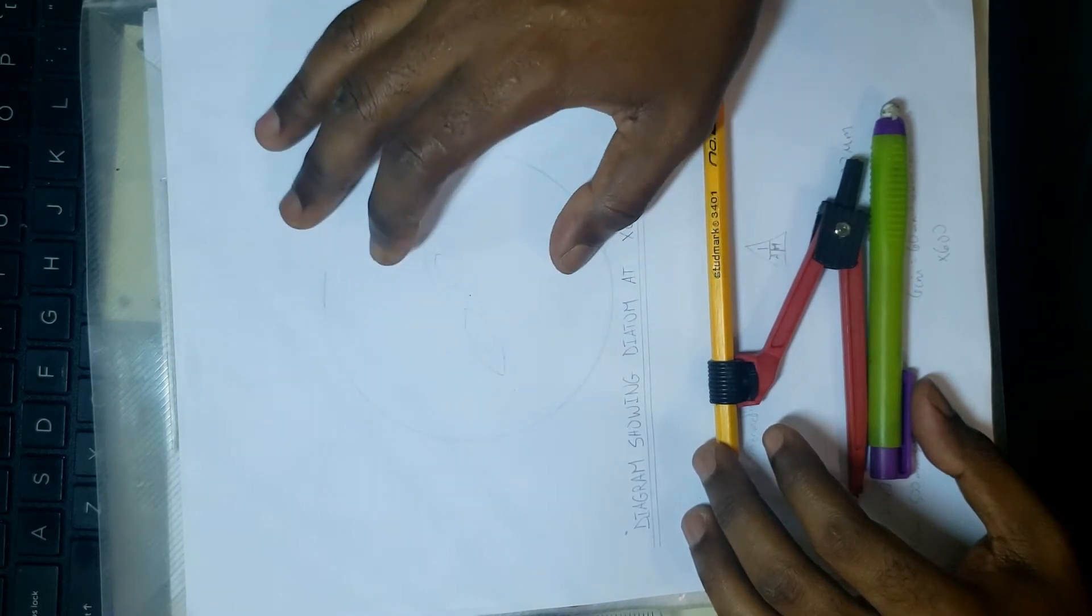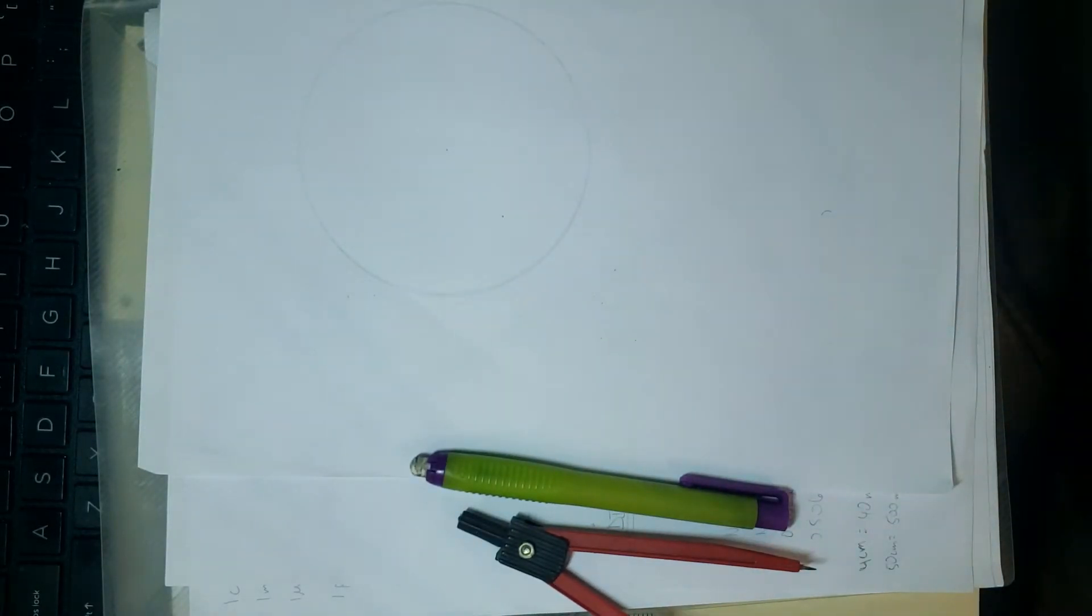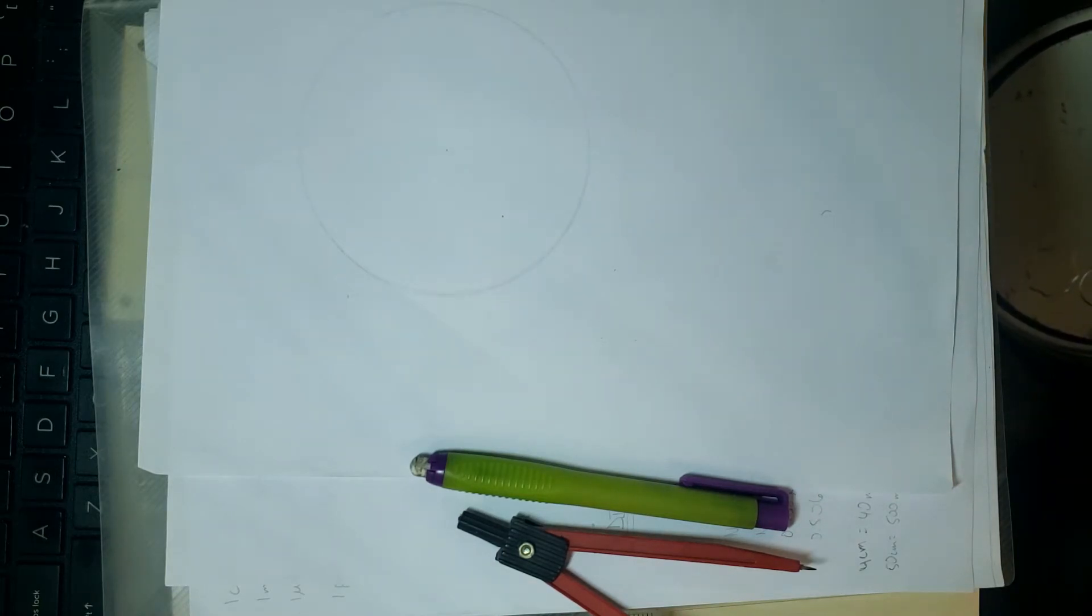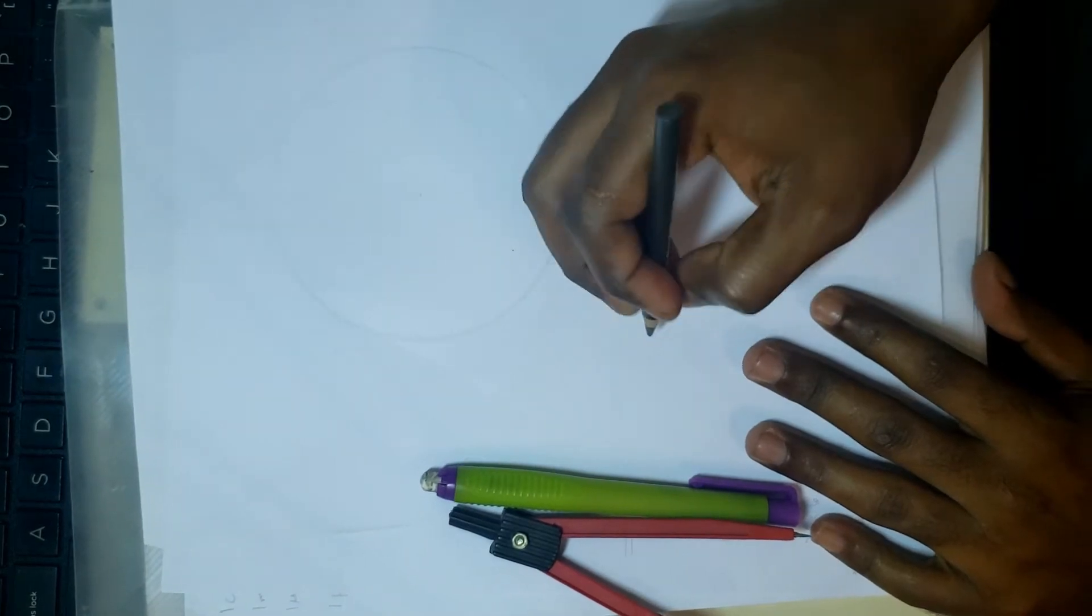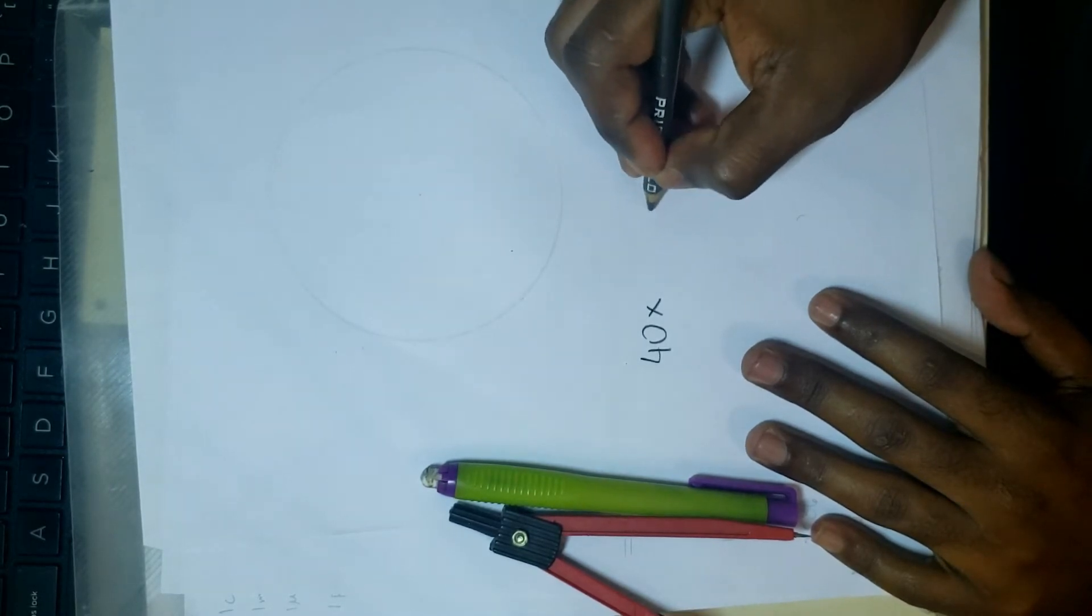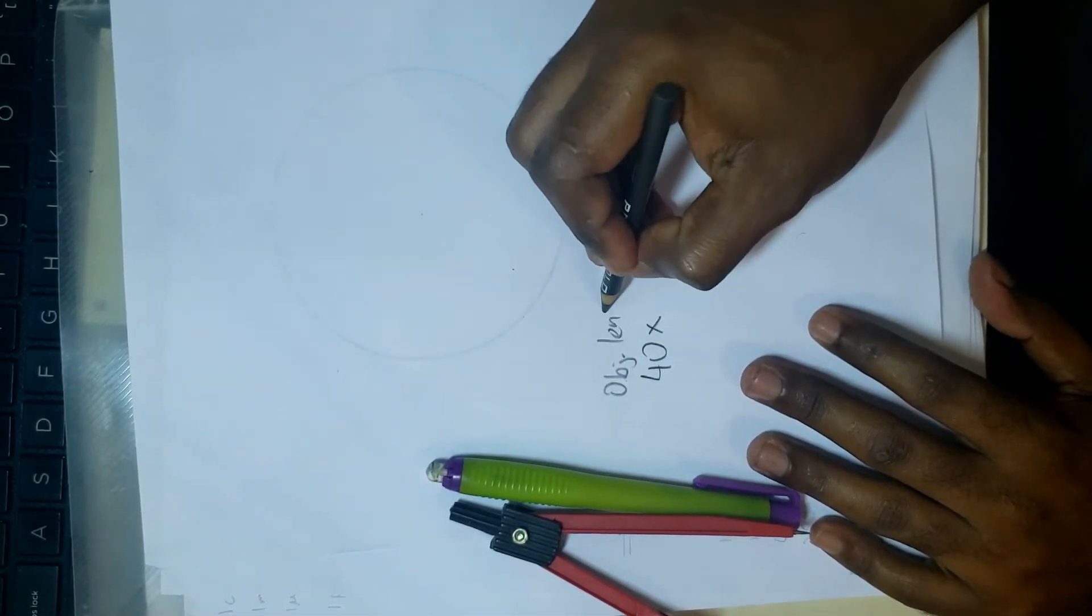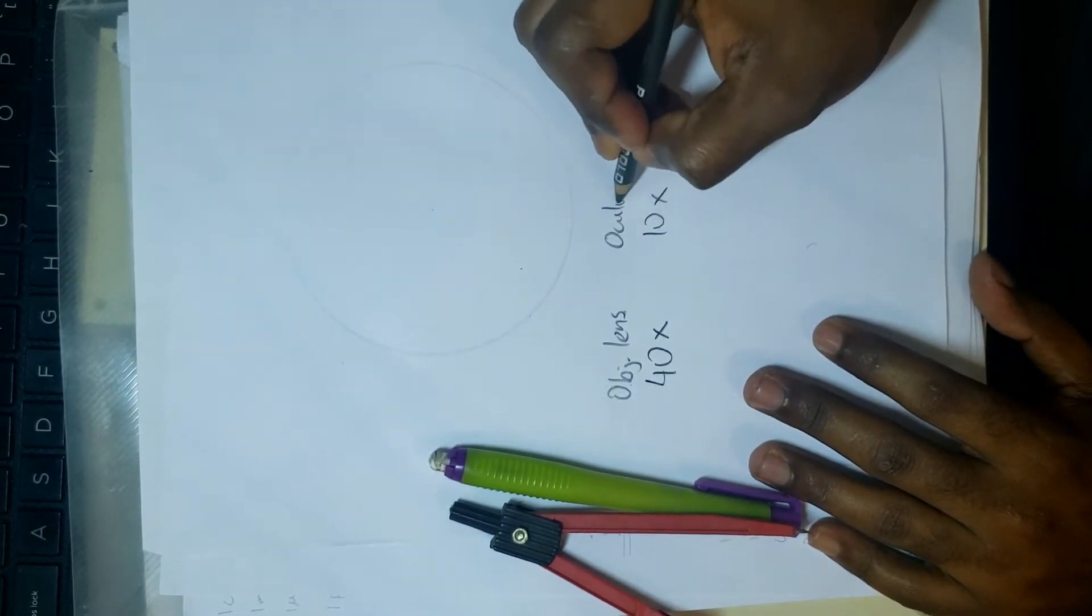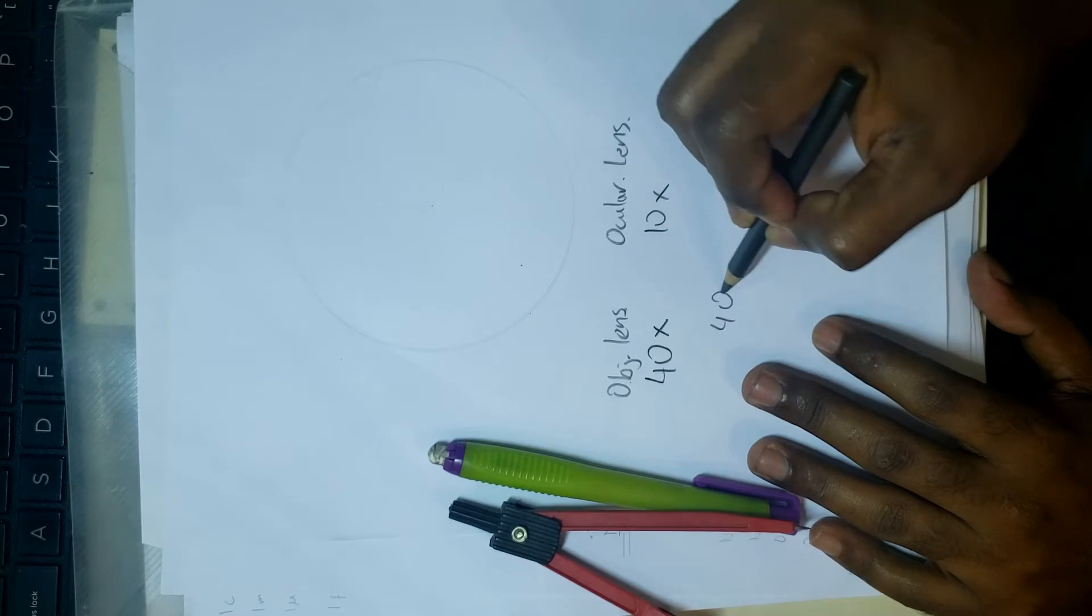The image selected today was a diatom from a water sample that we collected. It was viewed under the microscope. When we're viewing items under the microscope, one of the first things we have to do is record the magnification that we drew at. The magnification we're drawing at today is at the 40x lens, and you're using also the 10x eyepiece. This is the 40x objective lens and the ocular lens is another 10 times, so we're drawing at 400 times.